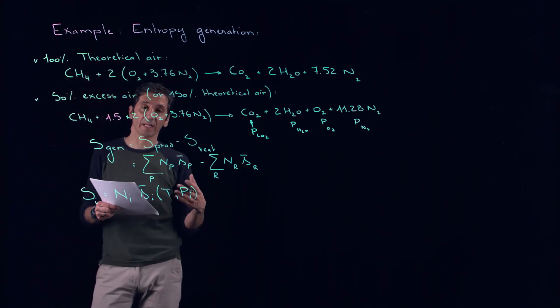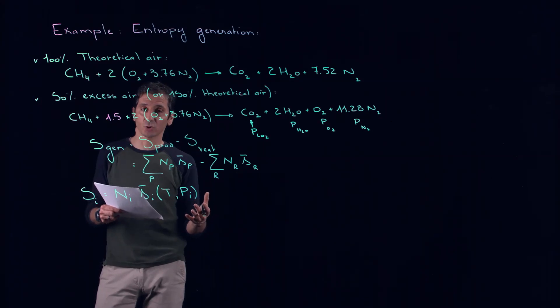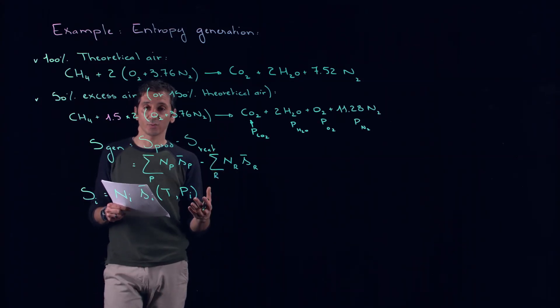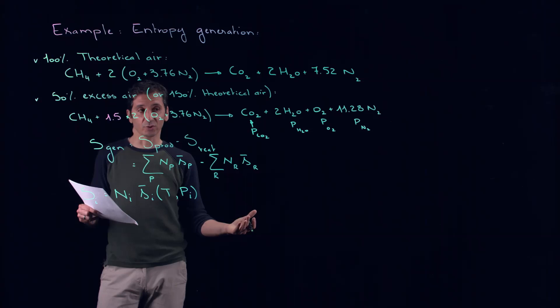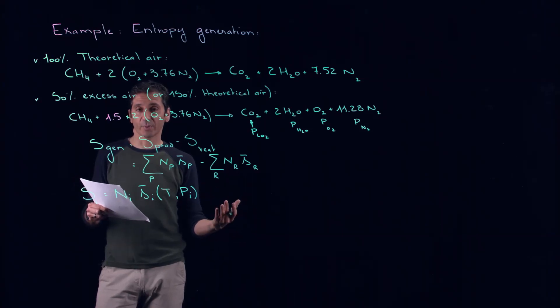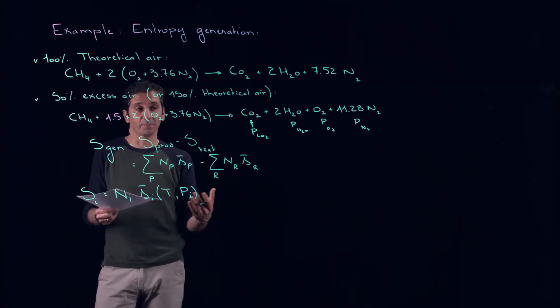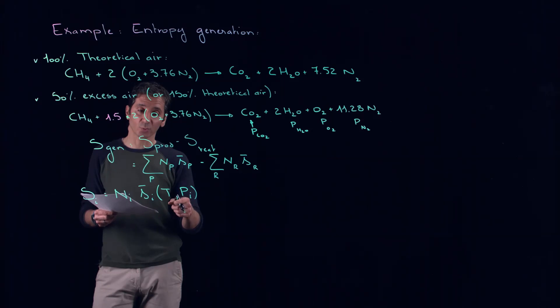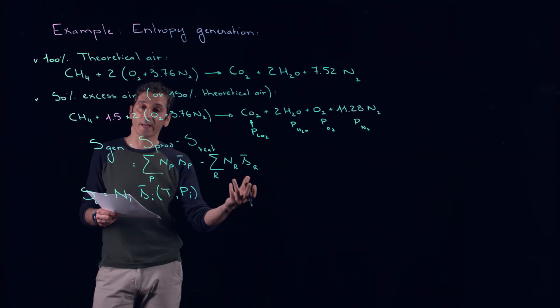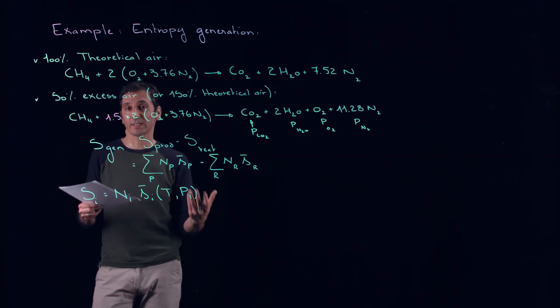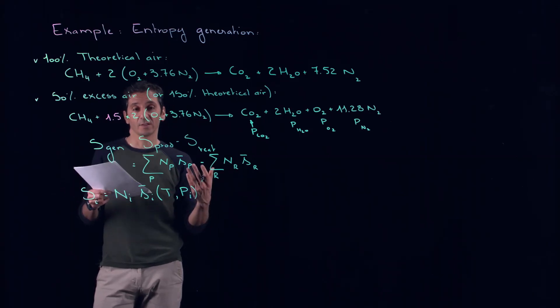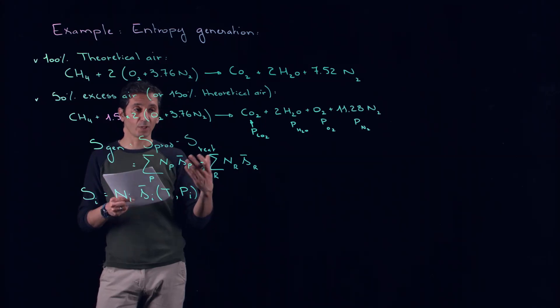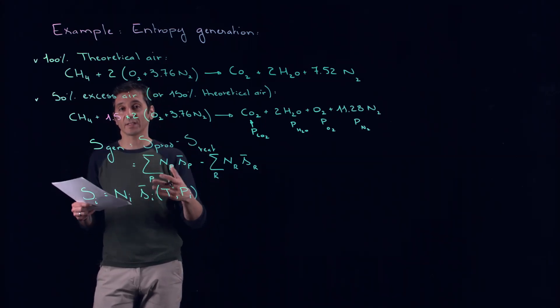We will have a difficulty tabulating the entropy of each component as CO2 for different pressures depending on its partial pressure. Instead of this, what we can do is tabulate only at one atmosphere and then correct the entropy that we get at one atmosphere, considering that our component is subject to its partial pressure and not the pressure of the mixture.